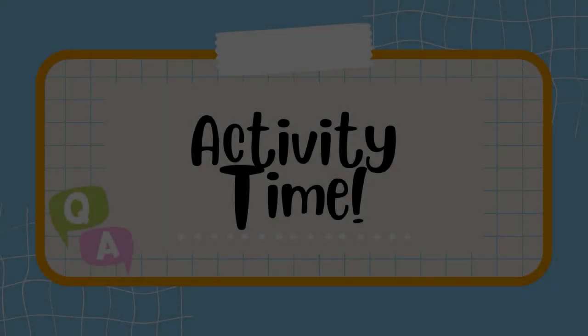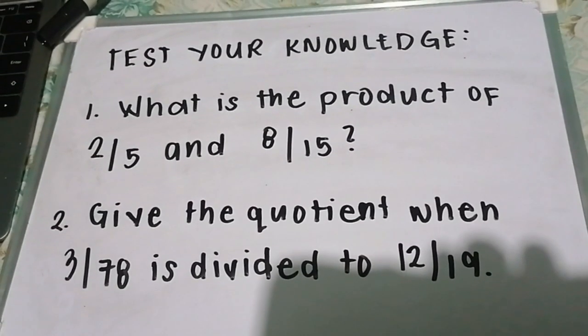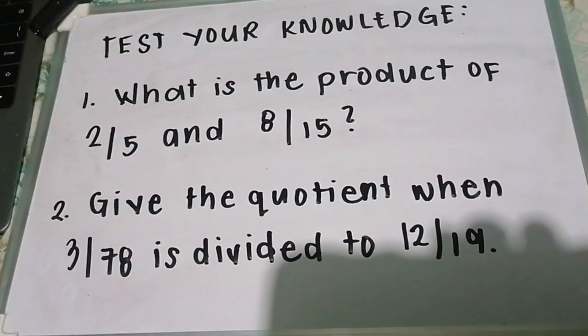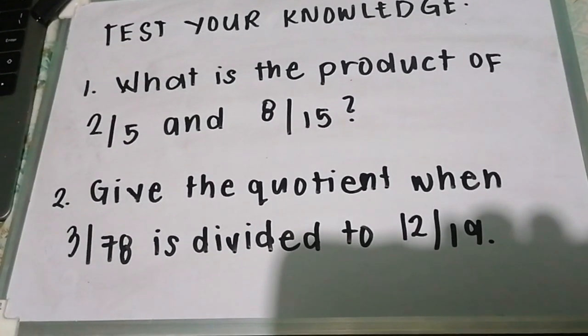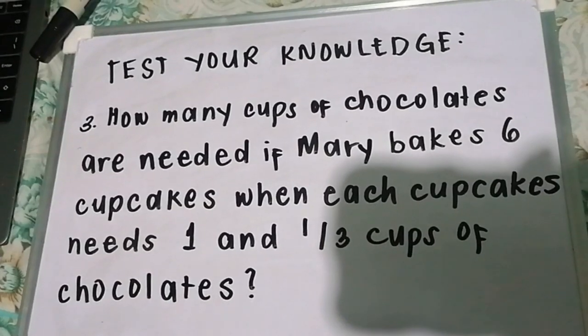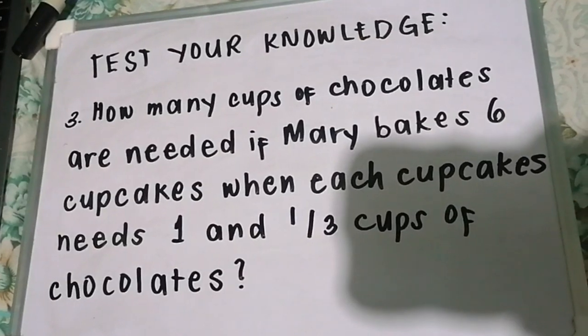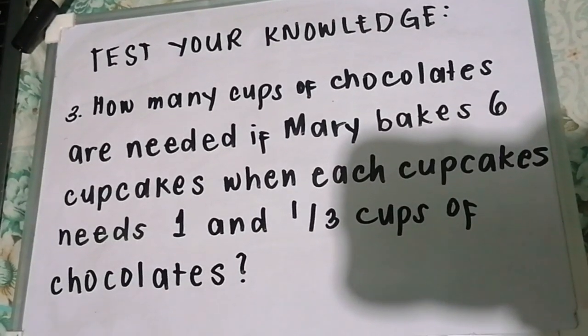Well, did you learn something? If so, I will be showing some sample problems for you to answer. You can comment your answers below, and let's check if your answers are correct. Example 1: What is the product of 2/5 and 8/15? Number 2: Give the quotient when 3/78 is divided by 12/19. Example number 3: How many cups of chocolate are needed if Mary bakes 6 cupcakes and each cupcake needs 1 and 1/3 cups of chocolate?